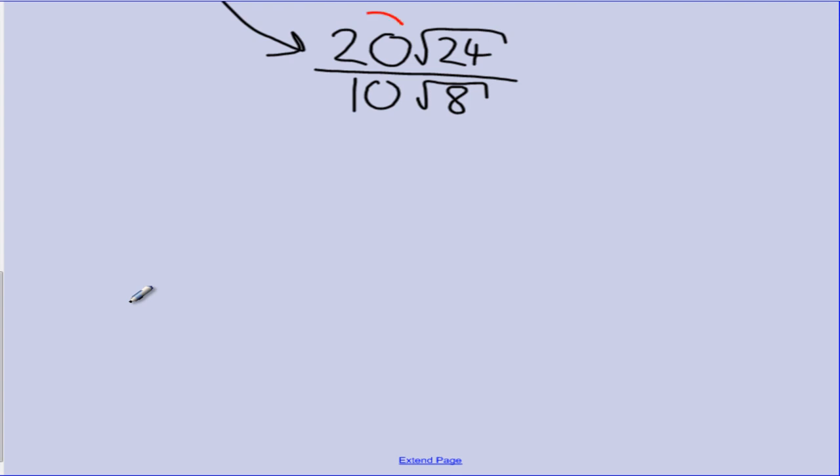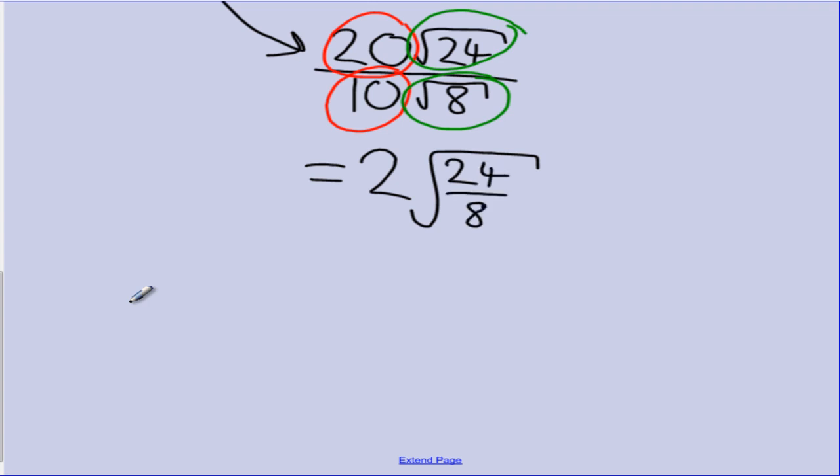Division runs with the same rules as multiplication. It is whole numbers divide whole numbers, and that will give us 2. And it is the surd divided by the surd. I'm going to write this as a middle step, just to make sure that we don't miss anything. So it is 24 divide 8 under that square root sign. So the 2 remains. The square root is still there. 24 divide 8 is 3.